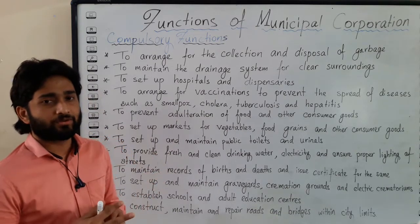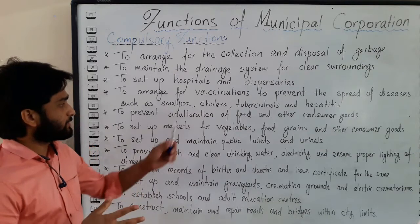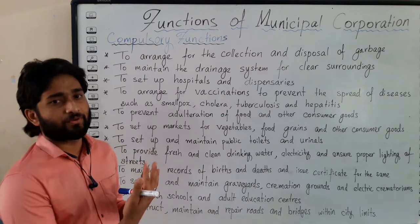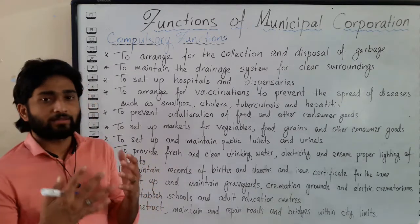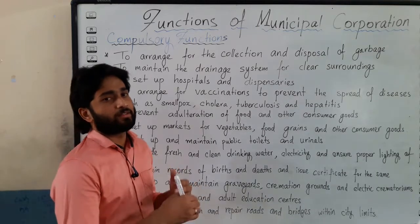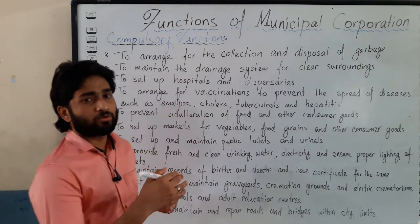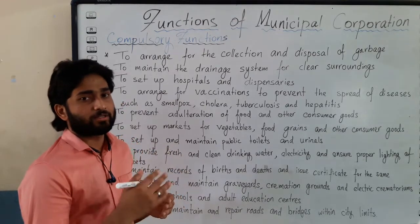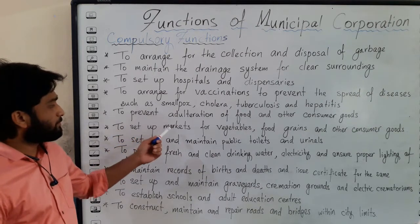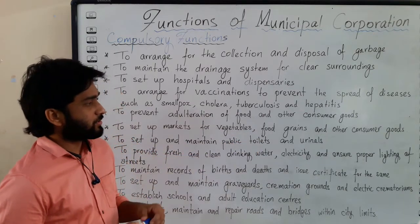Another function is to prevent the adulteration of food and consumer goods — to ensure safe production and supply of food for the people. The next function is to set up markets for vegetables, food, grains, and other consumer goods.